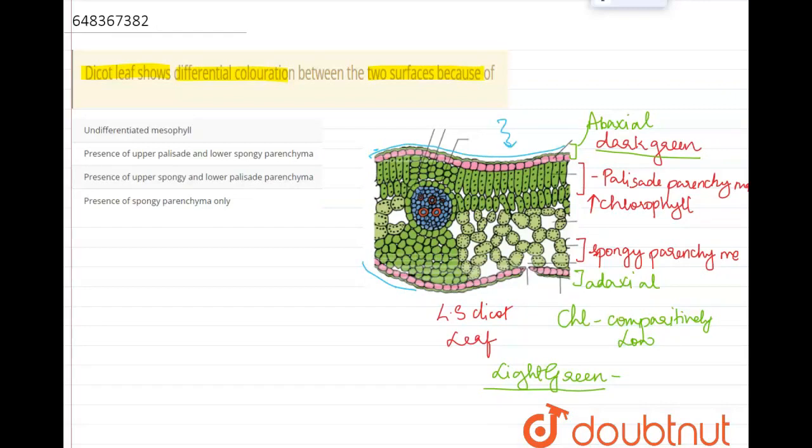So in that case, more amount of chlorophyll accumulation takes place at the abaxial surface itself. And hence, the chlorophyll concentration is really high in the palisade parenchyma. I hope you understood and thank you for watching.